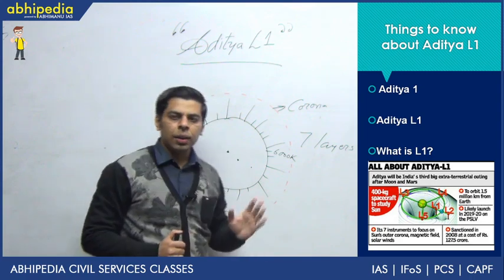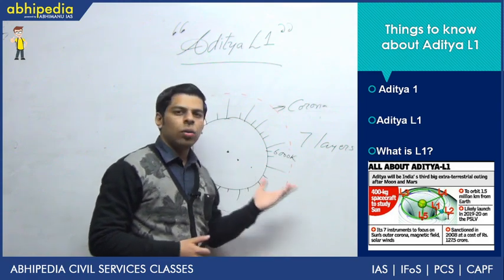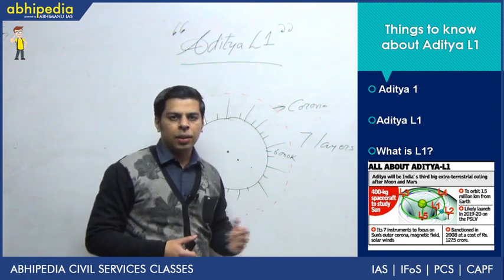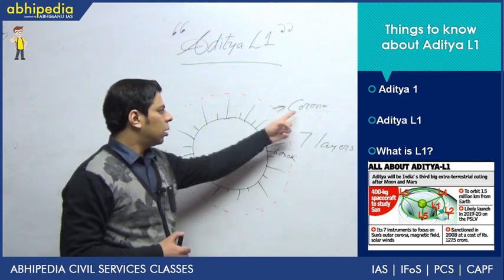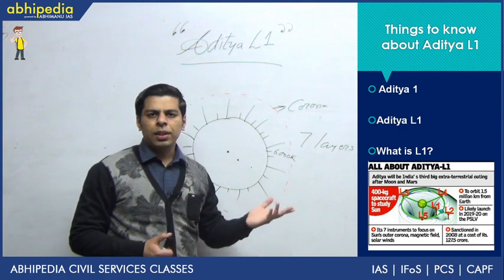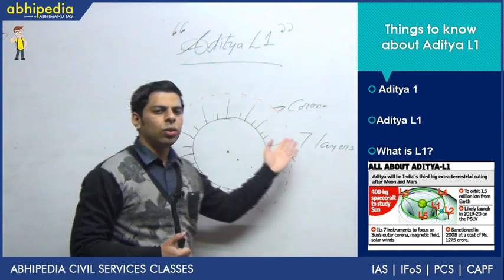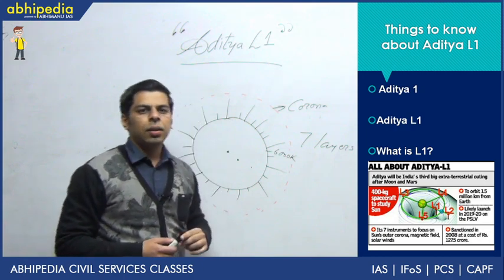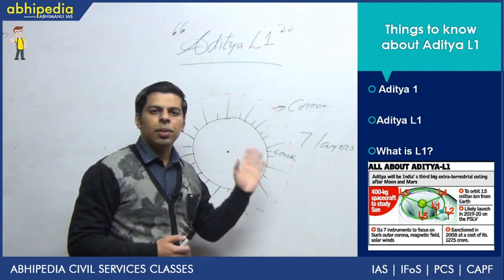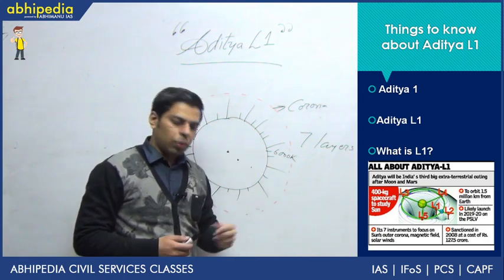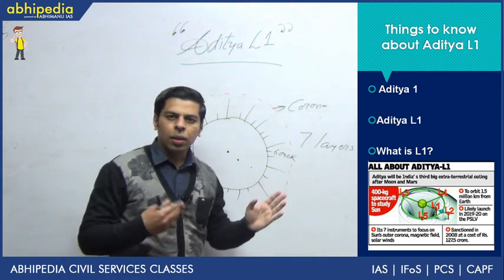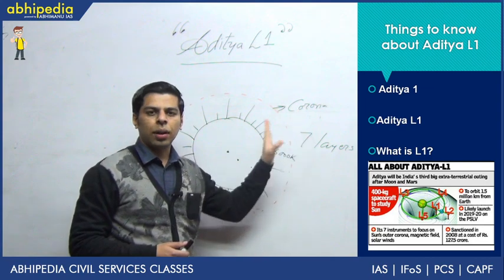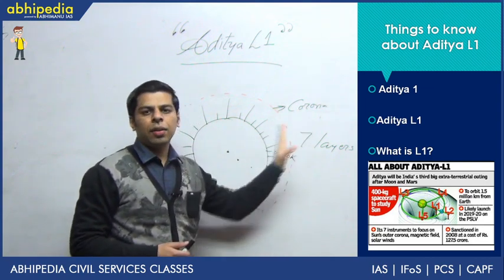Aditya 1 was a planned mission of ISRO. It was a light payload of almost 400 kg, planned to be sent in low earth orbit around 800 kilometers, and its main focus was to study the corona. The budget allocated was around 3 to 4 crores. But then the mission idea progressed and they realized it is better to study the system more exhaustively, especially since NASA and other agencies are also planning similar but more detailed missions. So Aditya L1 is the upgraded mission in which the payload capacity is being increased and it is not limited to studying just the corona.